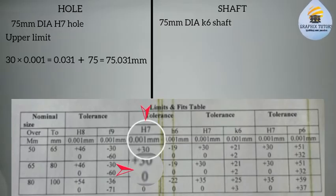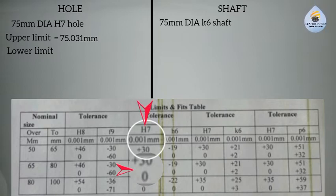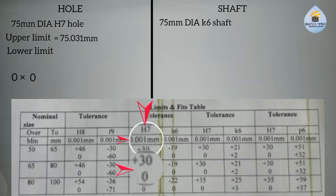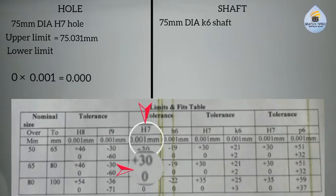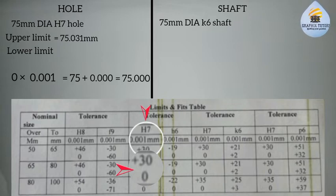For the lower limit of the hole, the lower value in the H7 column is 0. We multiply 0 by 0.001, giving 0.000 millimeter. Adding to the nominal diameter: 75 + 0.000 = 75.000 millimeter. So the lower limit of the hole is 75.000 millimeter.